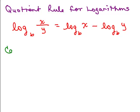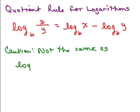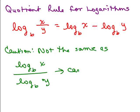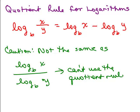Caution: that's not the same as log base B of X over the log base B of Y. You can't use the quotient rule there — that's actually just a quotient. You'd have to figure out what each log is and then do division. The difference is instead of doing the division first, X over Y, what you could do is take the log of X minus the log of Y.